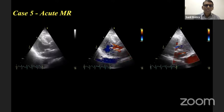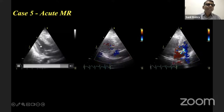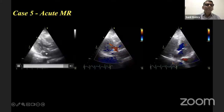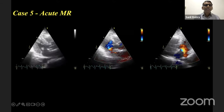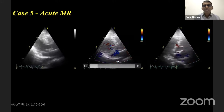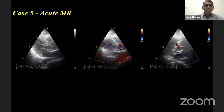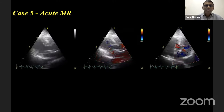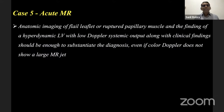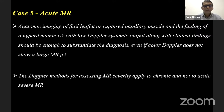Case 4 — Acute MR: A patient post-PTCA presenting with acute pulmonary edema. TTE showed papillary muscle rupture of the three-segment, flail segment, severe MR — though color Doppler did not show a large jet clearly due to the acute nature. In acute MR, do not spend excessive time assessing severity. The anatomic finding of a flail leaflet or ruptured papillary muscle, combined with a hyperdynamic LV with low Doppler systemic output and the clinical presentation, is sufficient to make the diagnosis — even without a large color MR jet. Importantly, Doppler methods for MR severity assessment apply only to chronic MR, not acute severe MR.